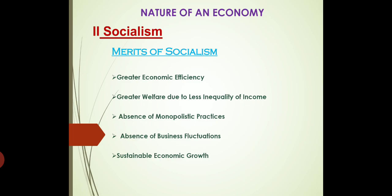The next merit is greater welfare due to less inequality of income. In India, for example, we have an unequal distribution of income where poor people are becoming more poor and richer are becoming more richer. But in a socialism kind of economy, they are trying to minimize inequality. If people have less inequality, welfare programs will be easily adaptable, economic growth will be there, and everyone earning largely the same income will contribute to GDP and higher development of the economy.